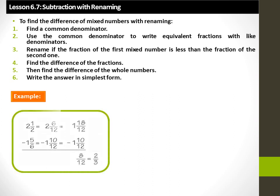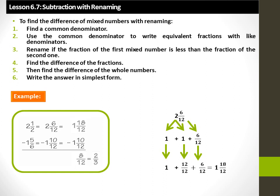Example: 2 1 over 2 minus 1 5 over 6. A common denominator is 12. 2 1 over 2 is equal to 2 6 over 12, and 1 5 over 6 is equal to 1 10 over 12. Since 10 over 12 is greater than 6 over 12, we must rename 2 6 over 12. 2 6 over 12 equals 1 plus 1 plus 6 over 12; we rename 1 whole as 12 over 12 and add it to 6 over 12 to get 1 18 over 12. Now subtract 1 10 over 12 from 1 18 over 12. The answer is 8 over 12, written as 2 over 3 in simplest form.